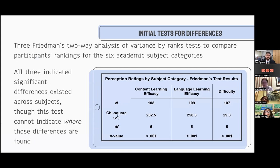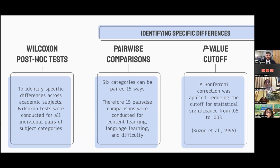For the analysis, I started with a non-parametric ANOVA — Friedman's test. This test indicated that for all three measures — content, language, and difficulty — there were significant differences between subjects. I then did Wilcoxon post-hoc tests to identify where those differences were. The six categories were compared with each other, creating 15 different pairwise comparisons each for content, language learning, and difficulty. I used a Bonferroni correction, which divided the usual 0.05 p-value cutoff by 15, to determine which comparisons were significantly different.